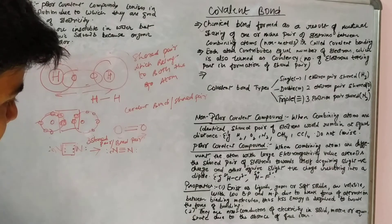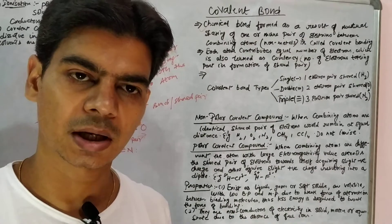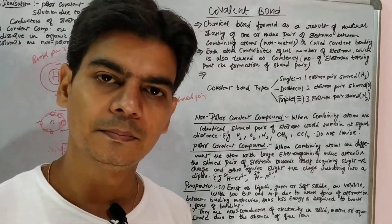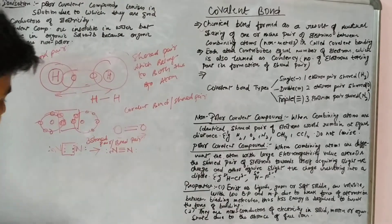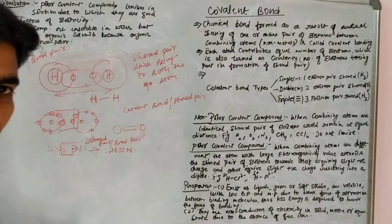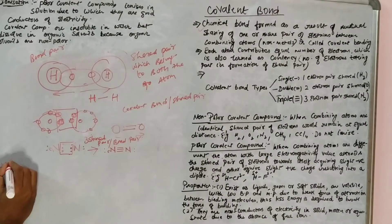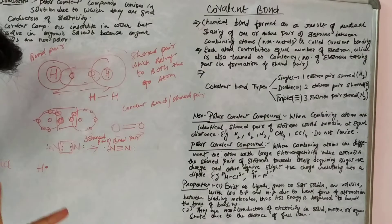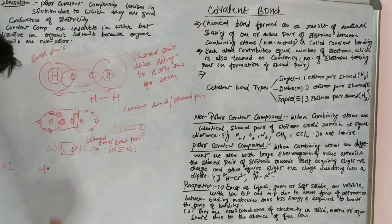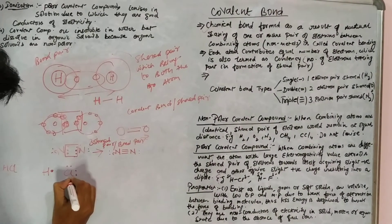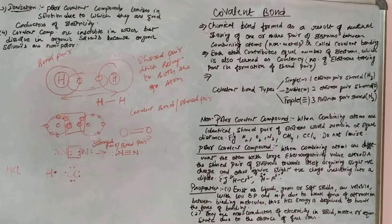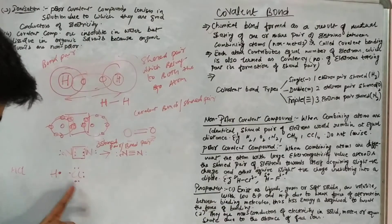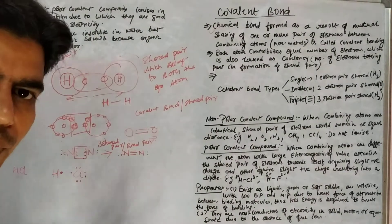That was the case when similar nonmetals combine using covalent bonds. Now let's see examples where different nonmetals combine to form covalent molecules. Let's take the example of hydrogen chloride, HCl. We know that hydrogen has one electron in its outermost shell, so it needs one more electron to complete two electrons. Chlorine has seven electrons in its outermost shell, so chlorine also needs one electron to complete its octet — that is, to complete eight electrons.